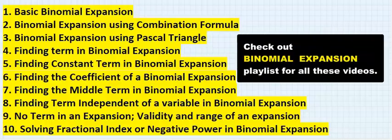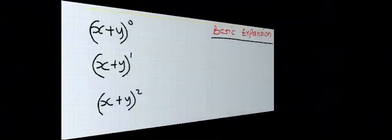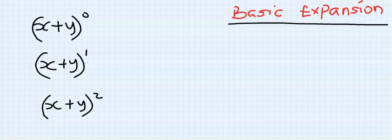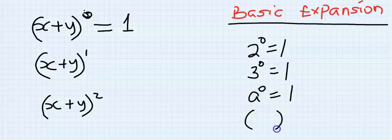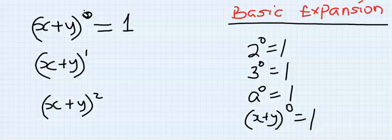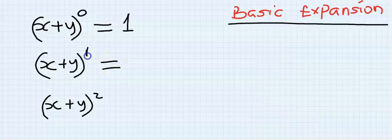Each part of this video series will cover basic expansion. Binomial expansion deals with expanding brackets. Anything to the power of zero is one — in our previous videos we have shown that two to the power of zero is one, three to the power of zero is one, eight to the power of zero is one. Anything inside the bracket to the power of zero is one, regardless of how it's arranged.